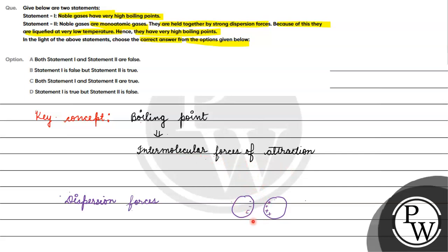That's why we say that noble gases will have very low boiling points, not high boiling points. So Statement 1 is false. Statement 2 says noble gases are monatomic gases held together by strong dispersion forces, liquefied at low temperature, and have high boiling points — this statement is also wrong. Both statements are wrong, so Option A is the correct answer. I hope you understood it well. Thank you and all the best.